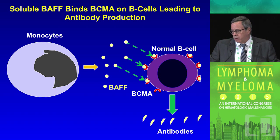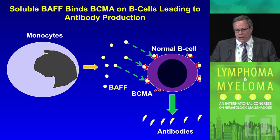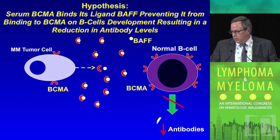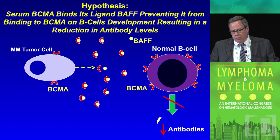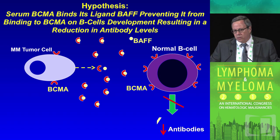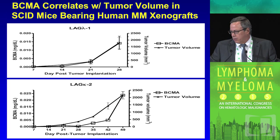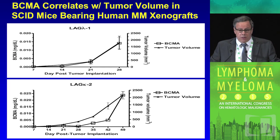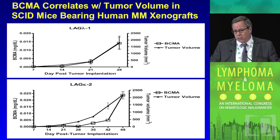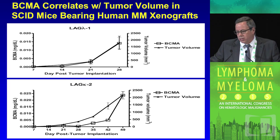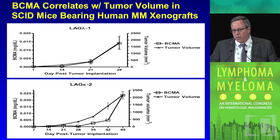The biology here is quite interesting. Normally, soluble BAFF coming out of monocytes binds to BCMA on B cells, driving plasma cell development and antibody production. Our hypothesis was that the solubilized form of BCMA would sequester BAFF and prevent it from binding to B cells, thereby preventing antibody production. To test this, we performed a series of experiments across multiple xenografts developed from our own patients, showing that BCMA is present and goes up with tumor burden, and also goes down with response to drugs like cyclophosphamide, melphalan, bortezomib, and lenalidomide.